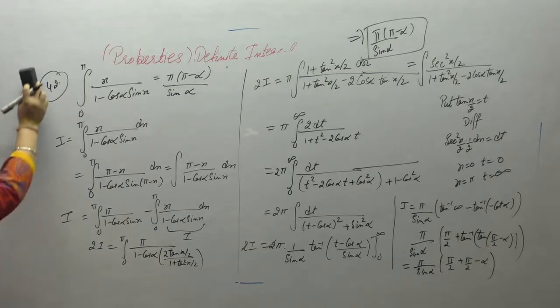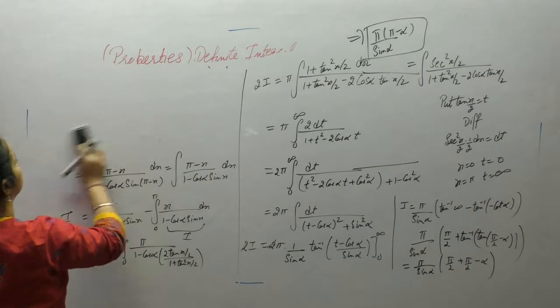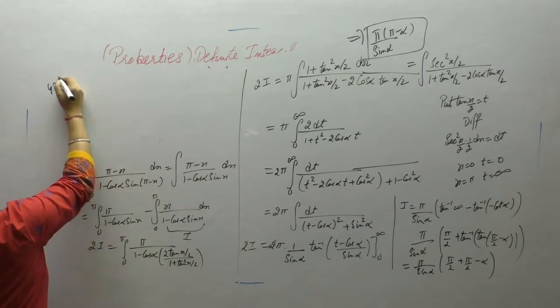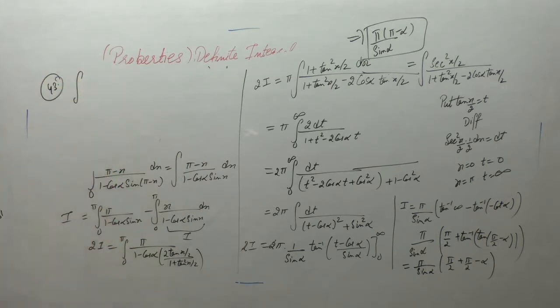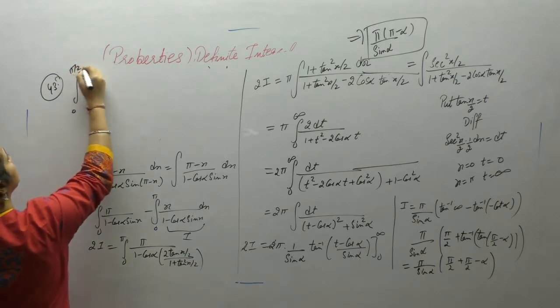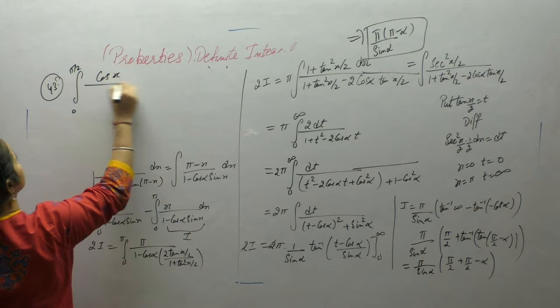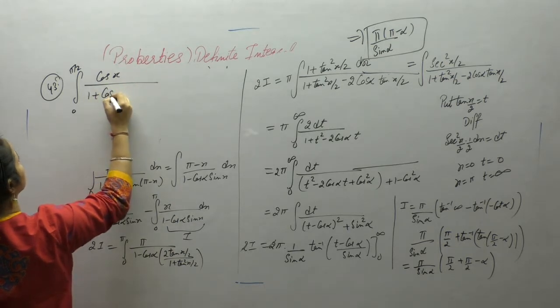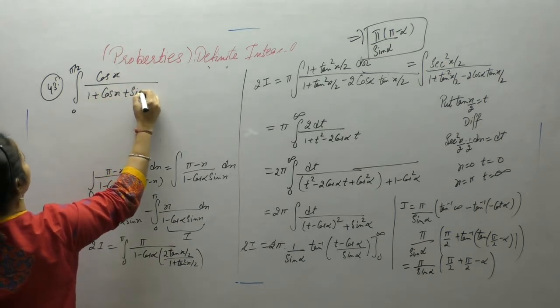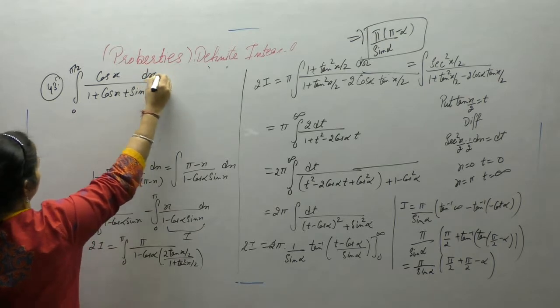Now the next one is integral of 0 to pi by 2, cos x upon 1 plus cos x plus sin x dx.